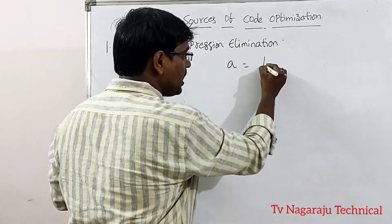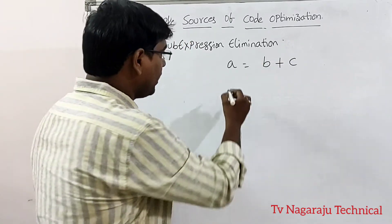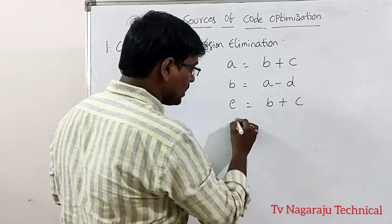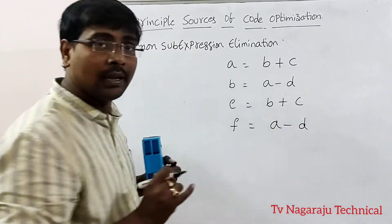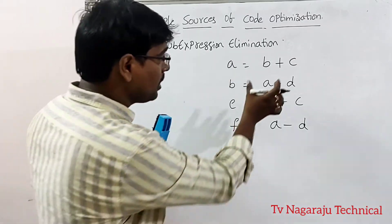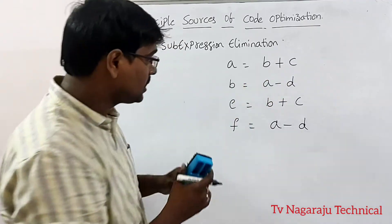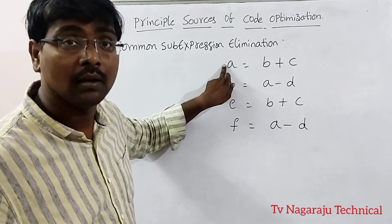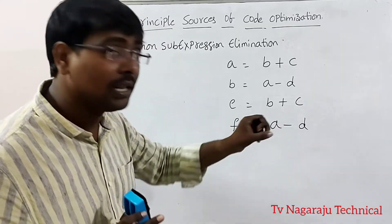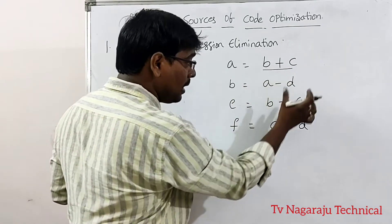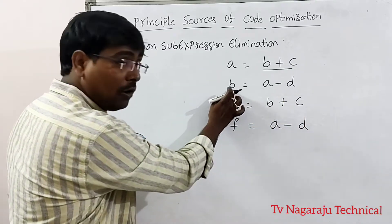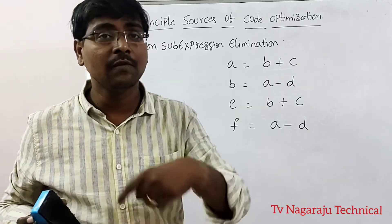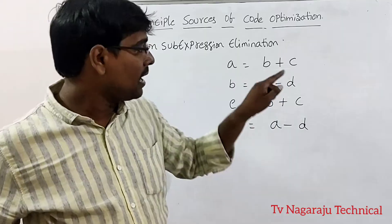Consider an example: a = b + c, then b = a - d, then e = b + c, then f = a - d. Observe the common sub-expressions. Here b + c was already calculated, but before the second occurrence the value of b was changed, so this is not a common sub-expression. Common sub-expression means it occurs another time and in between the values of the variables are not changed.